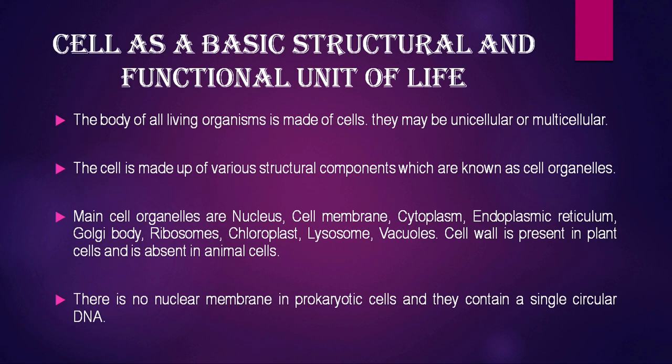We need to understand what is the meaning of cell. Cell is the basic fundamental unit of life. Every living organism is made up of cells and cells have specific structural components. Be it plants, animals, monera, or bacteria, there is a basic structure. A cell may be unicellular or multicellular. Unicellular organisms are made up of one cell, while multicellular organisms are made up of various cells, where different groups of cells take on different functions, creating a division of labor.